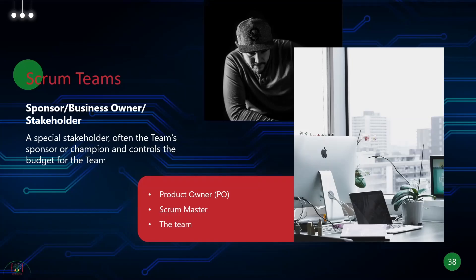The main three roles of Scrum are the Product Owner, the Scrum Master, and the Development Team. Of course, you're also going to have the sponsor, the business owner, the stakeholder — who are the champions who might control the budget for the team. We show the finished product to them, but usually they may not take part in our Scrum ceremonies.